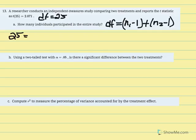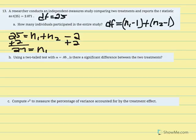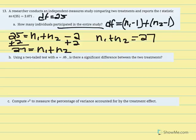Grouping things together: 25 equals n1 plus n2 minus 2. Adding 2 to both sides gives us 27 equals n1 plus n2. We don't need to know each individual sample size — just how many participated in the entire study. So n1 plus n2 equals 27 total participants. Remember, when final statistics are reported, what's in the parentheses indicates the degrees of freedom for the test performed.